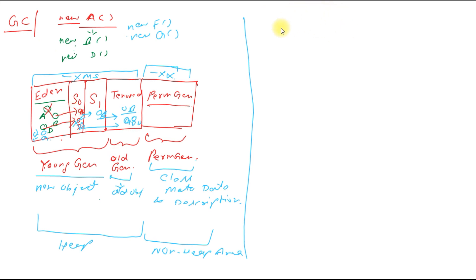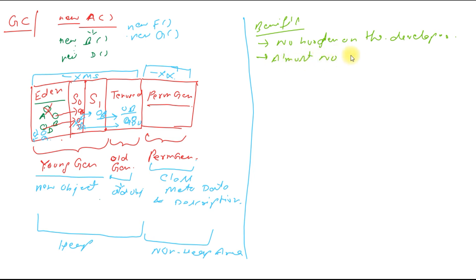Now what are the benefits of using garbage collection? First, there is no burden on the developer. Second, there is almost no memory leakage, though developers still need to be careful. Third, there is no dangling pointer problem. All of these were drawbacks of C, and garbage collection helps us remove them.